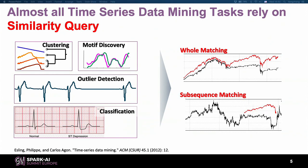All kinds of time series data mining tasks rely on the similarity query. There are two kinds: the first is whole matching, where all time series are the same length. The second is subsequence matching, where you have a very large time series with many data points, but the query time series is relatively short — maybe 1,000 data points — and you need to find the most similar record. Today we are talking about whole matching, and our system can be modified to support subsequence matching as well.